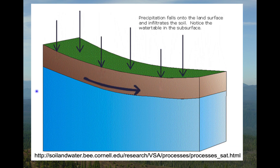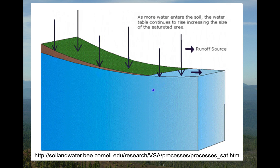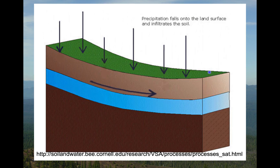I want to thank Todd Walter for some great animations that describe this process. In the simplest view, we have a water table below the land surface, with a higher elevation of the water table in upslope areas and a lower elevation down in the valley and the stream. As precipitation falls and infiltrates, that water table rises, intersects the land surface, and this area becomes the saturated area where we have saturation overland flow occurring.